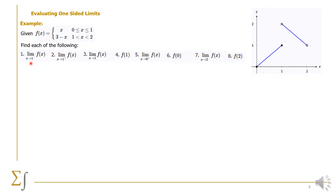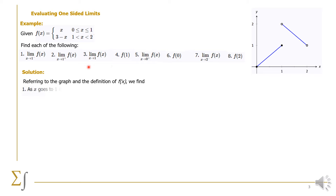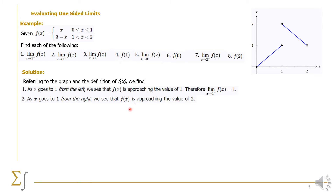We will have 8 limits to evaluate and take them one by one. The first limit: the limit of f(x) as x approaches 1 from the left. We refer to the graph — approaching 1 from the left, the limit of f(x) as x approaches 1 from the left is equal to 1. In the second case, approaching 1 from the right, the value of the function gets closer and closer to 2. Although 2 is not included because of the open circle, we are asking for the limit, not the function value. So the limit as x goes to 1 from the right of f(x) is equal to 2.